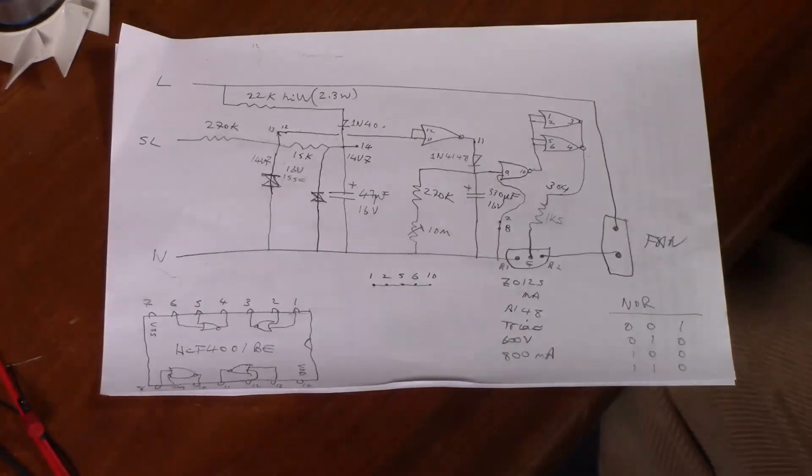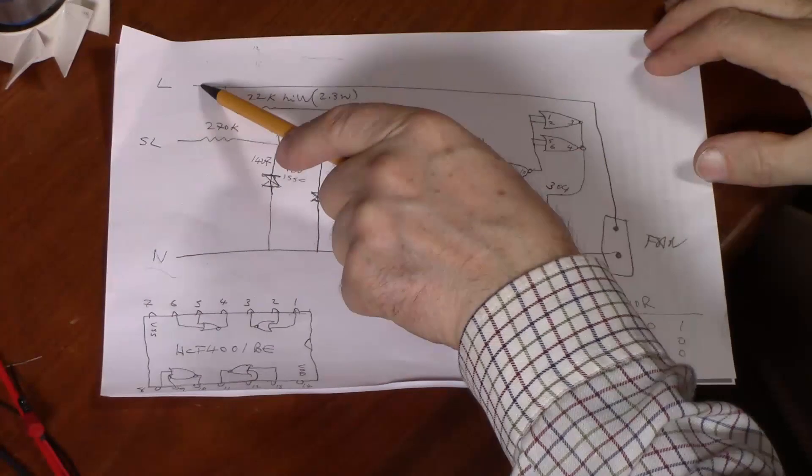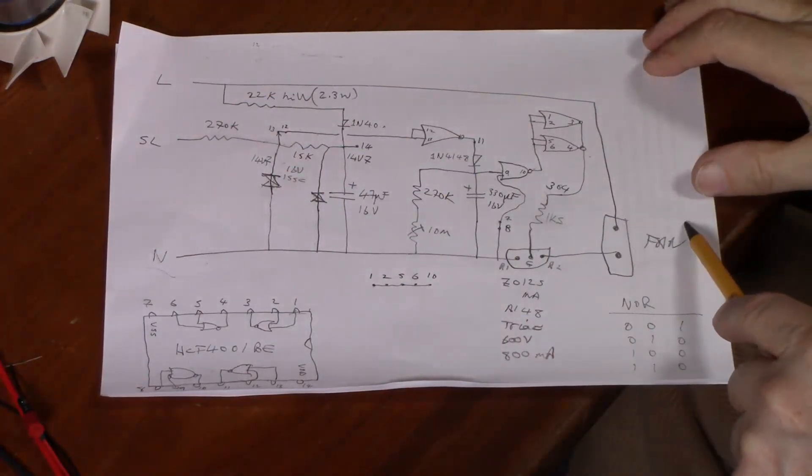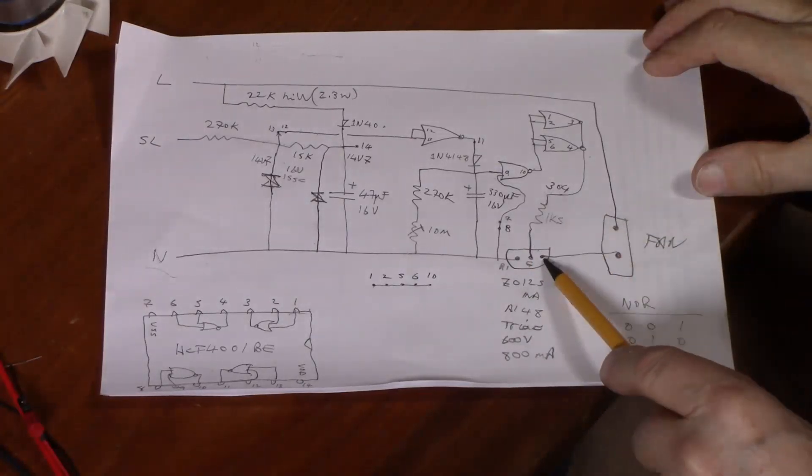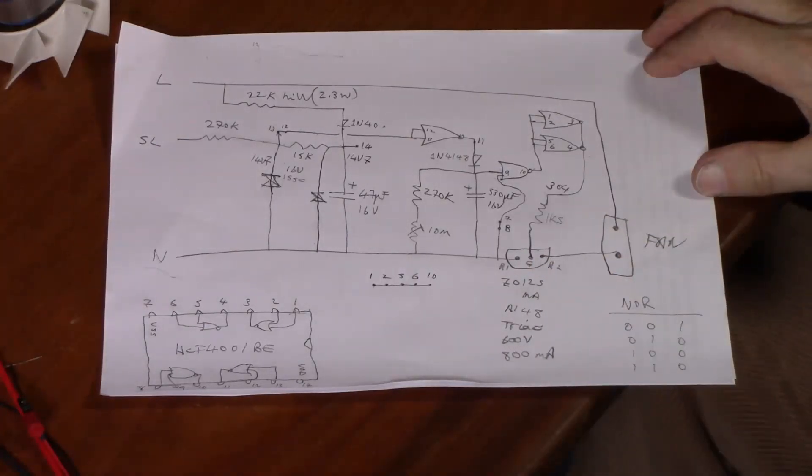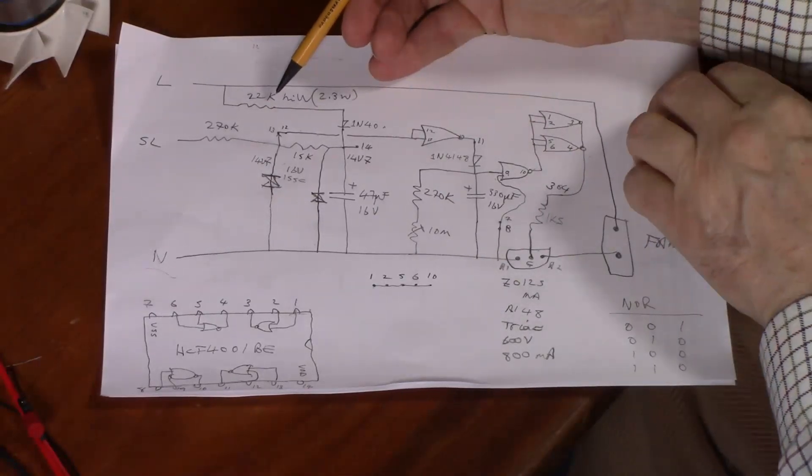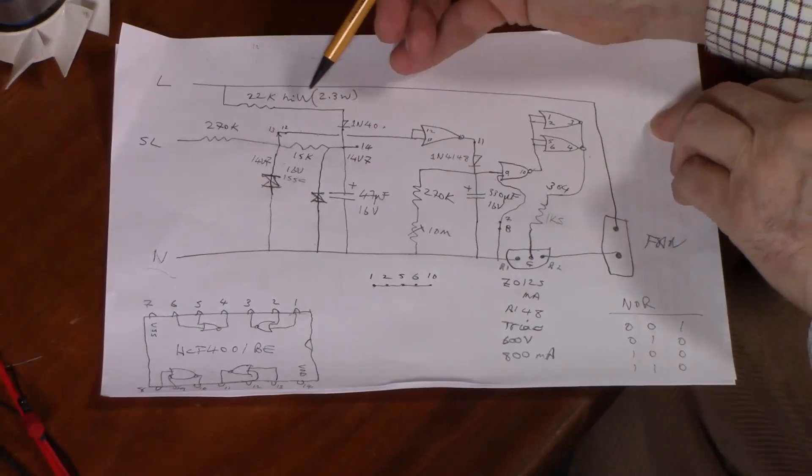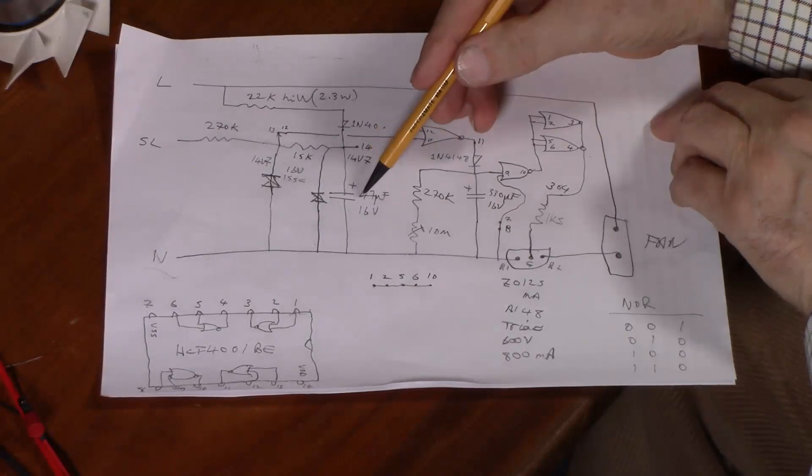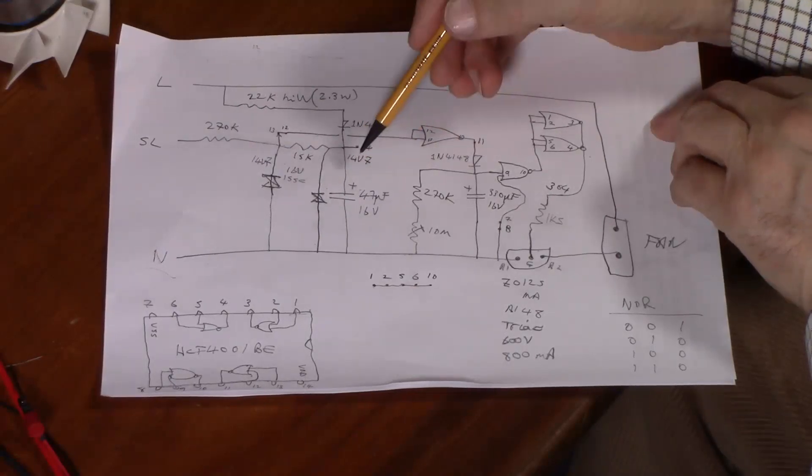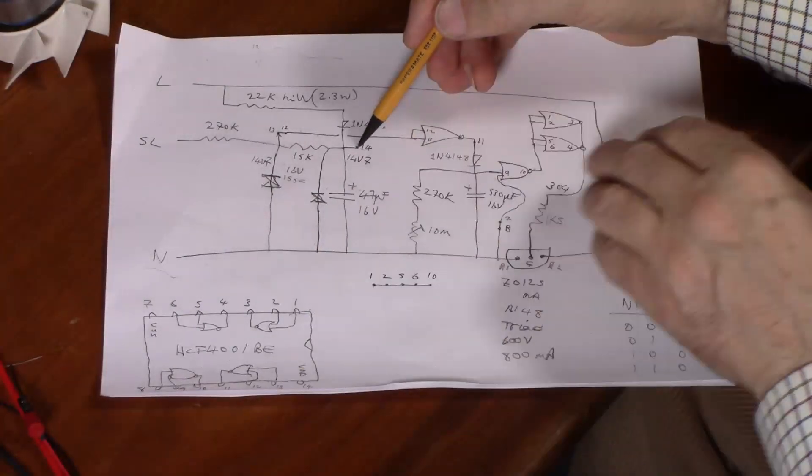Well, the way this works is that the live comes in here and is connected to the fan. The neutral comes in here and is connected to the fan via a triac. The mains voltage goes through this high wattage 22k resistor, is rectified by this diode and builds up a voltage on this capacitor here which is limited by this zener diode to 14.7 volts. That's just the power supply for the rest of the electronics.